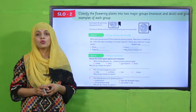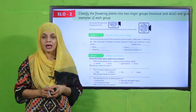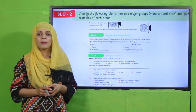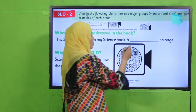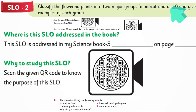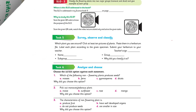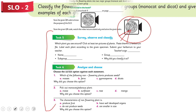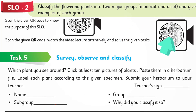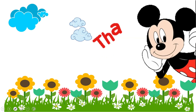My dear students, what you will do next is: after reading the SLO, dhundho apni book mein konse page number pe diya gaya hai, uske baad apni book ka naam aur page number in blanks mein note down karna hai. Then, isi SLO ke saath jo second QR code diya hai, usko scan karna hai. Scan karne pe jo video aapko milegi, isko poora dekhen, and then you will be able to complete these tasks. My dear students, complete these tasks in time. Thank you so much, and Allah Hafiz.